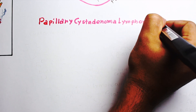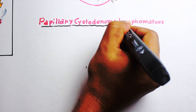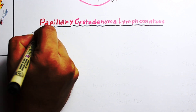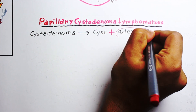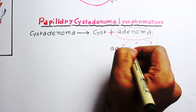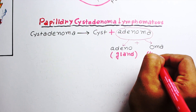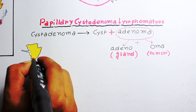Warthin's tumor is also called papillary cyst adenoma lymphomatosum. It's difficult to remember such a long name, but it actually depicts the exact histologic character of the tumor. Let's break it down: 'cyst adenoma' means cyst plus adenoma. The Greek word 'adeno' means gland and 'oma' means tumor, so it is a cyst-like glandular tumor.